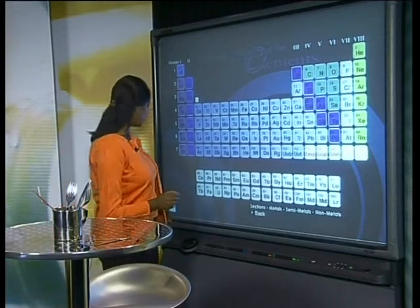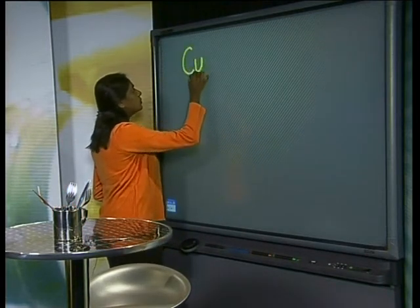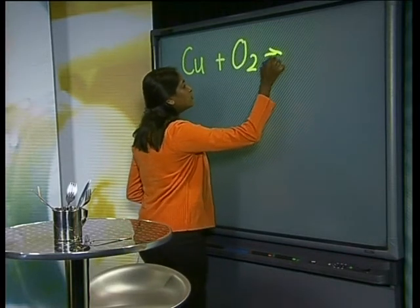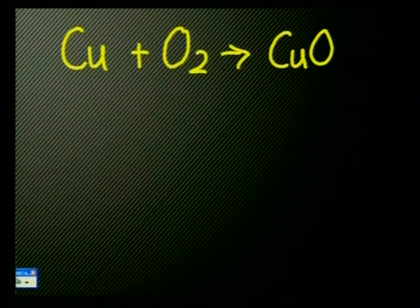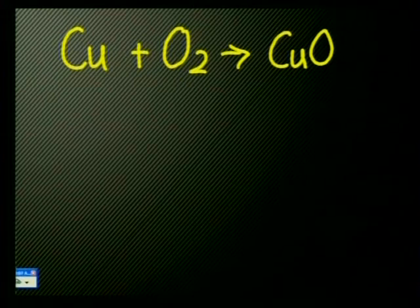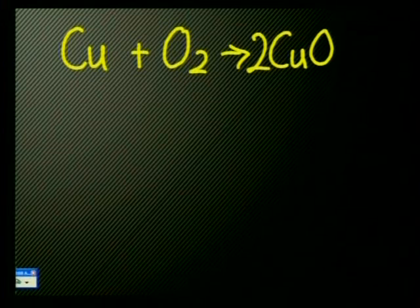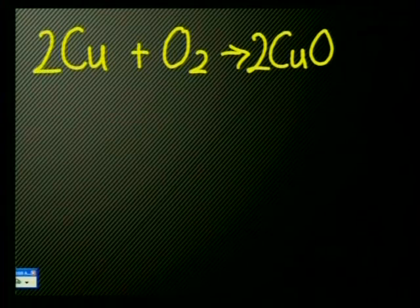Let's write the chemical equations for these reactions. The word equation for the copper reaction is: copper plus oxygen reacts to form copper oxide. The chemical equation is: Cu + O₂ → CuO. Check if this equation is balanced. There are two atoms of oxygen in the reactants and only one in the product. To correct this, we write a 2 in front of CuO to show two particles of copper oxide are formed. Now the copper atoms are not balanced, so we write a 2 in front of Cu as well. Now the equation is balanced: 2Cu + O₂ → 2CuO.